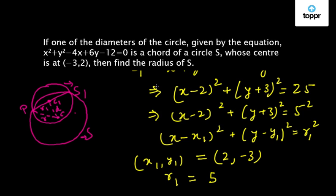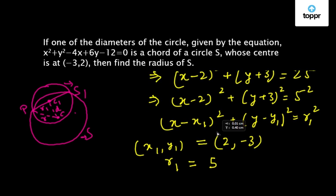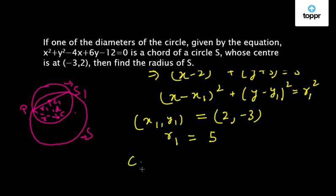Now we know the center of the circle S1 and the center of the circle S is already given in the question. So C1 is (2, -3) as we have calculated here and C, the center of the circle S, is already given in the question as (-3, 2).